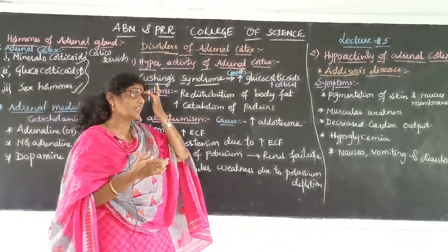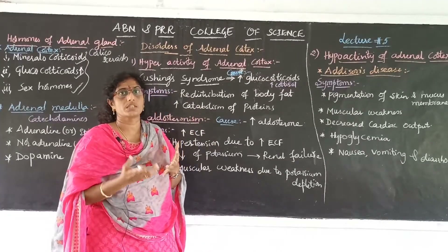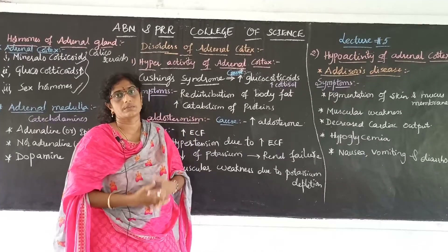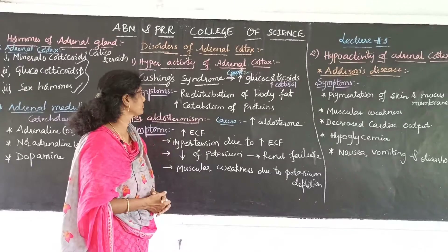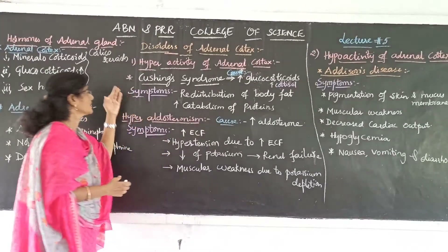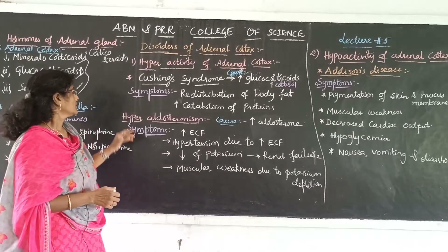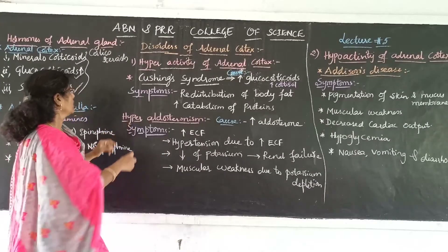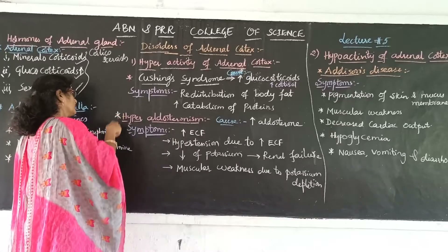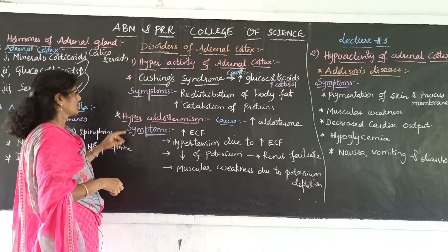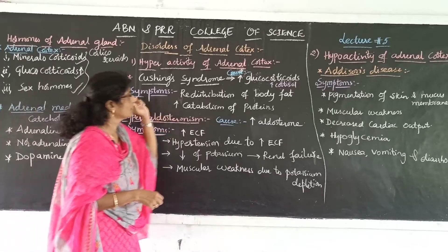This redistribution of fat happens because catabolism of proteins takes place more and more. These are the key symptoms of Cushing Syndrome. The second important disease and disorder of corticosteroids is hyperaldosteronism.